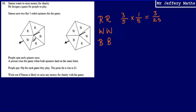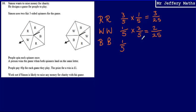Looking at W — that's going to be one over five on the first spinner multiplied by two over five on the second, giving us two over 25. And then a B on the first spinner would be one fifth, and on the second spinner two fifths. Multiplying those together also gives us two over 25. So those are the possible ways people could win: RR, WW, or BB.